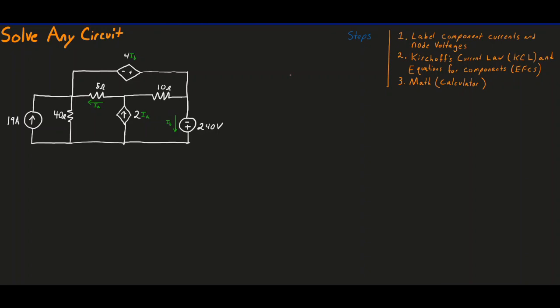So how it works, there's three steps. You begin with labeling your component currents and your node voltages. You move on to writing KCL, and then the equations for your components. And at that point, you have a solvable system of equations that you can put into a calculator or solve by hand.